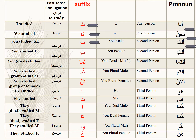Enta: daras-ta — you suffix ta with dhamme. Enti: daras-ti — suffix ta with kisra. Entuma: daras-tuma — you suffix ta-dhamme, mim, alif. Daras-tuma. Entum: daras-tum.